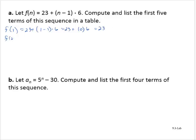f of 2 would be 23 plus 2 minus 1 times 6. So that's 23 plus 1 times 6, which is 23 plus 6, which is 29.